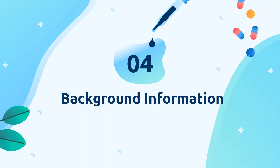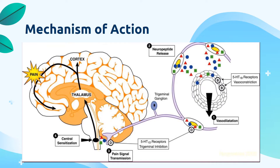Now let's move on to the background information of allotriptin. Allotriptin is a selective 5-HT1B/1D receptor agonist. It binds with high affinity to 5-HT1B, 1D, and 1F receptors. The activation of 5-HT1 receptors located on intracranial blood vessels leads to vasoconstriction that correlates with the relief of migraine headaches. The activation of 5-HT1 receptors on sensory nerve endings in the trigeminal system leads to the inhibition of release of pro-inflammatory neuropeptides. Such inhibition will disrupt the pain signal transmission and result in symptomatic relief of migraine.